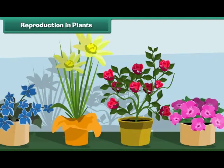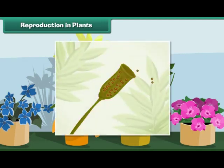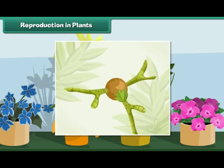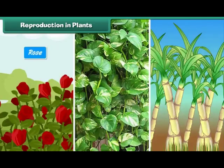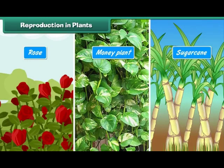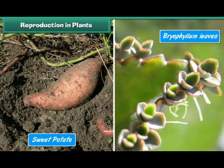Reproduction in Plants: Plants reproduce in different ways. Most of the flowering plants produce seeds. Some plants do not produce seeds — they produce spores which can grow into a new plant. Some plants can reproduce from their body parts. For example, potato can be developed from an underground stem having buds on it. Rose, money plant, and sugar cane can be developed from stem cuttings. Bryophyllum can be developed from its leaves. Sweet potato grows from its roots.